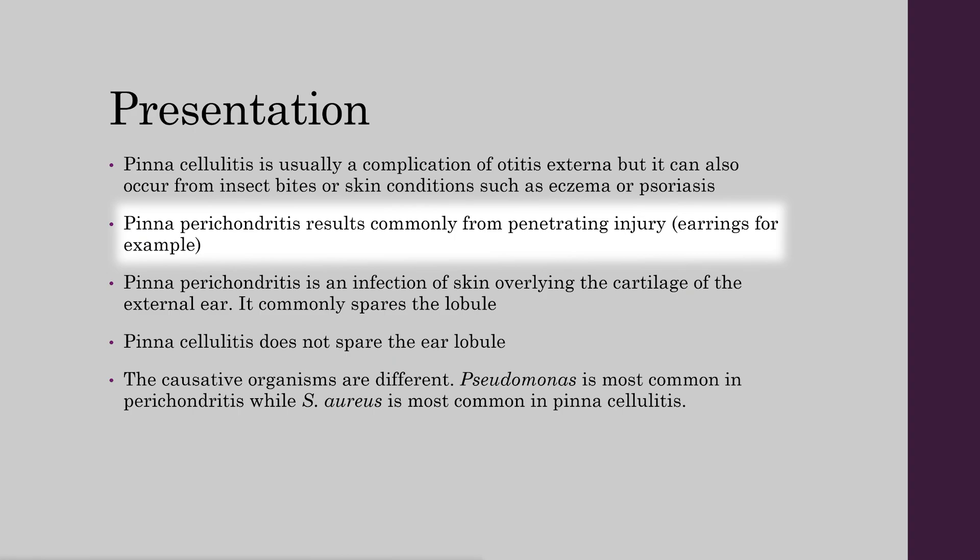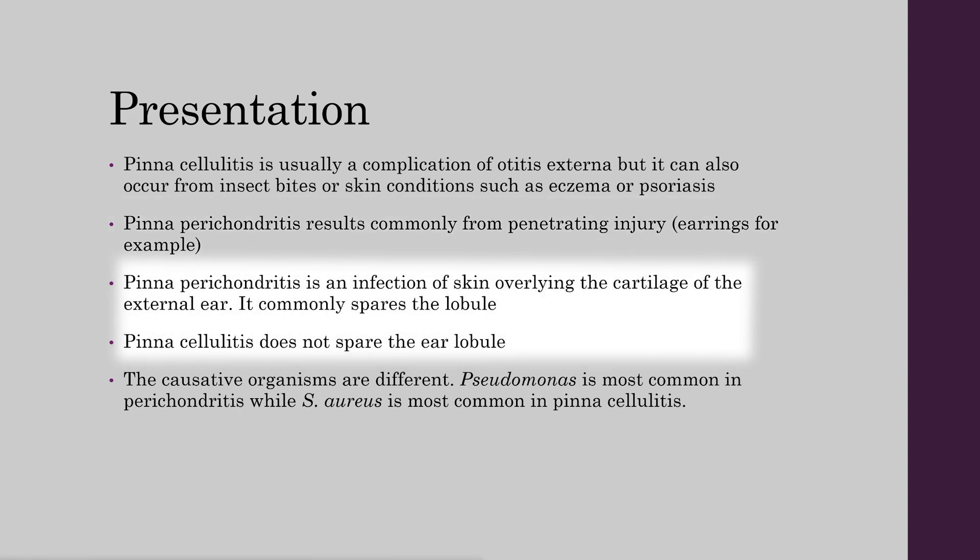The main difference is that pinna cellulitis, because it is the skin of the pinna that is infected in general, you will see the lobule of the ear involved. However, in pinna perichondritis it is an infection of the skin overlying the cartilage of the external ear, and therefore most commonly it will spare the lobule.